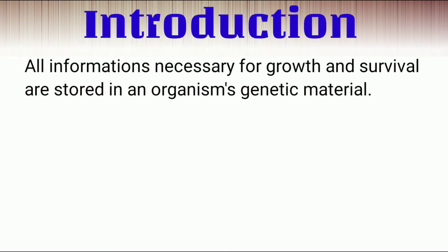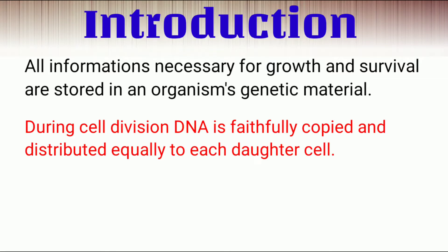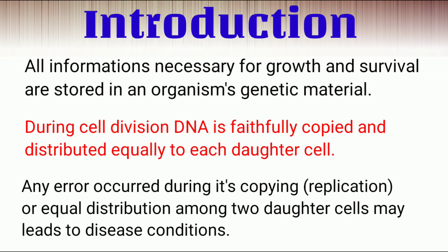All information necessary for growth and survival is stored in an organism's genetic material. It is faithfully copied and transmitted to the progeny generation after generation. Any error occurred during its copy formation or equal distribution among two daughter cells may lead to disease condition.